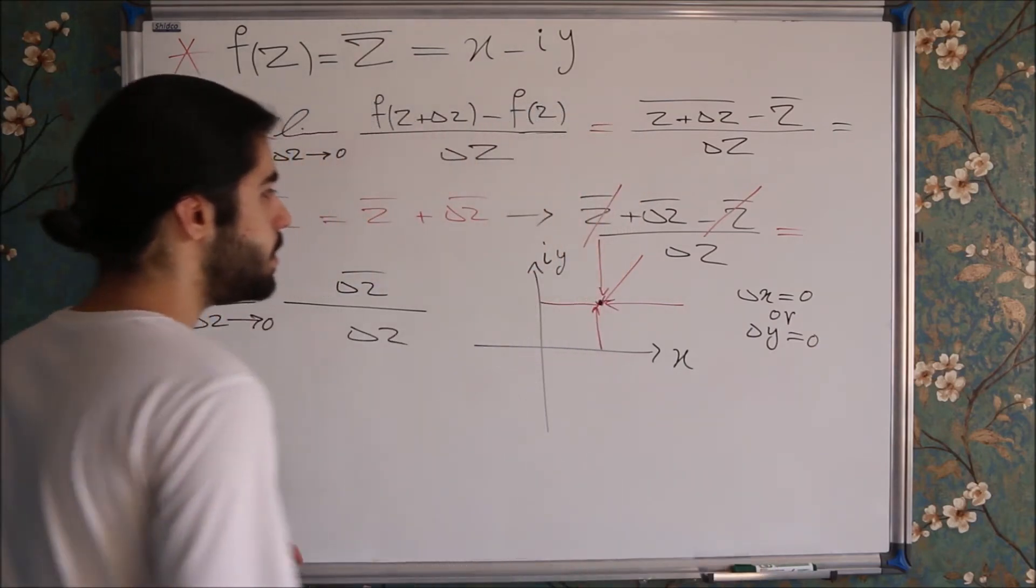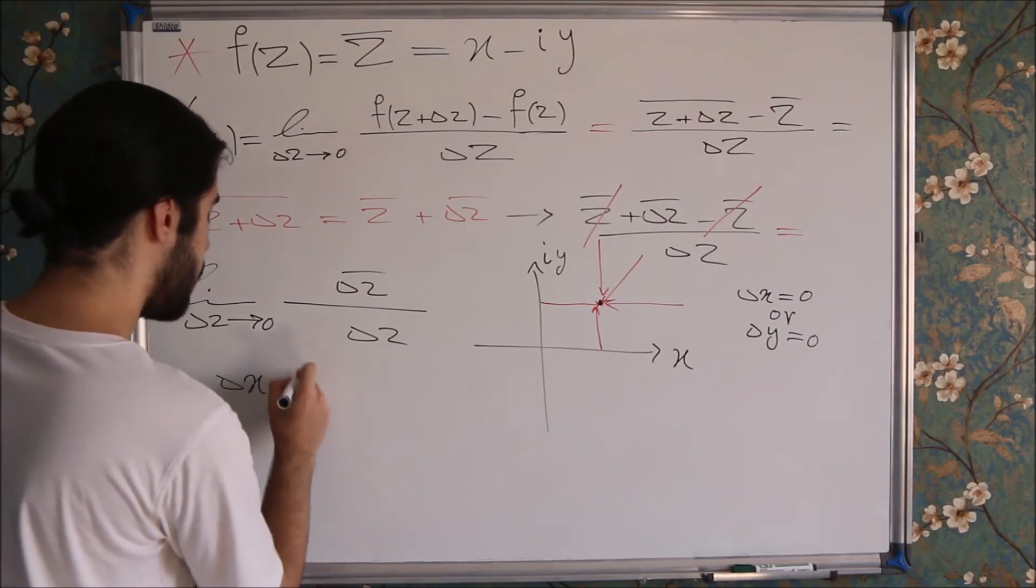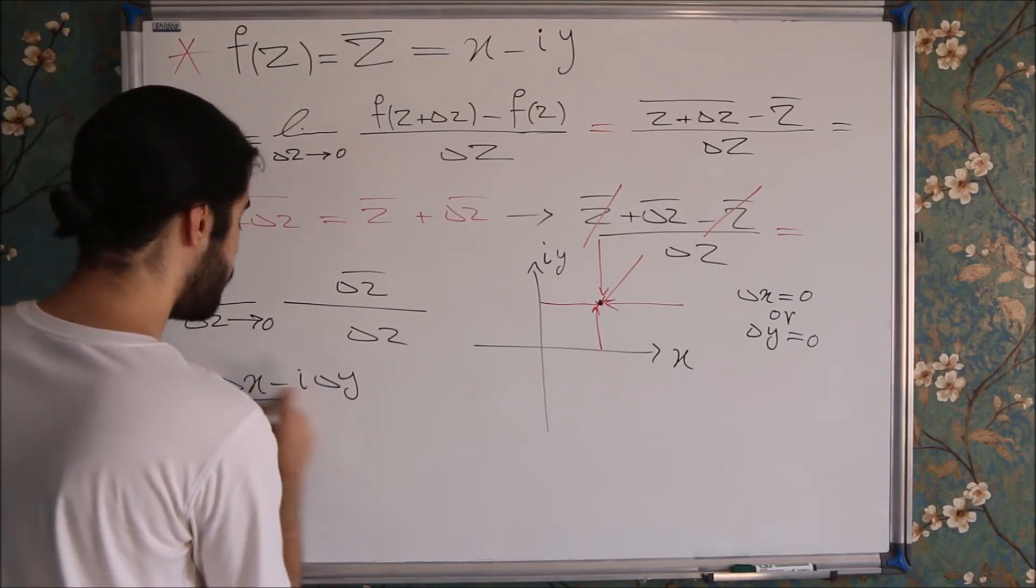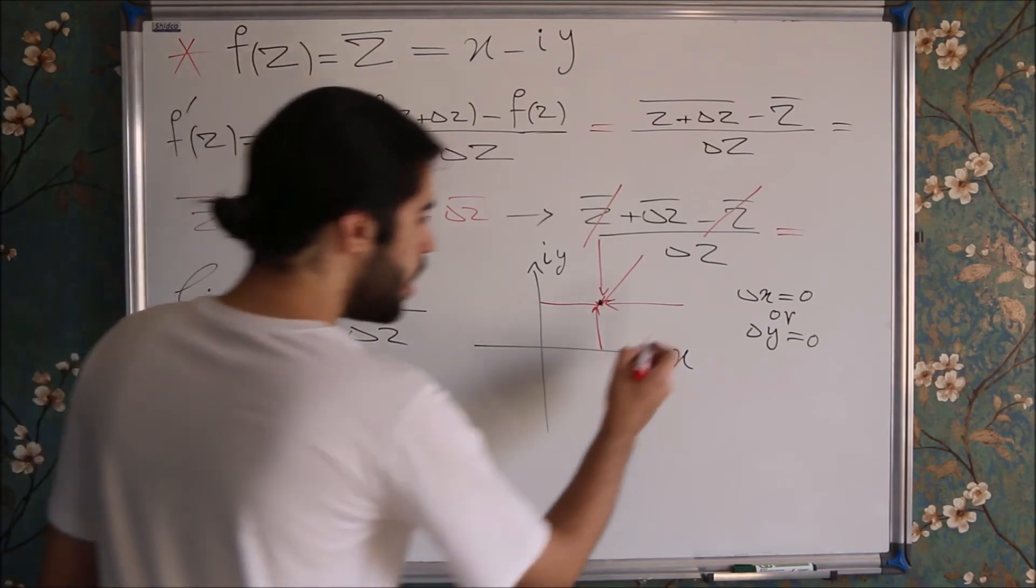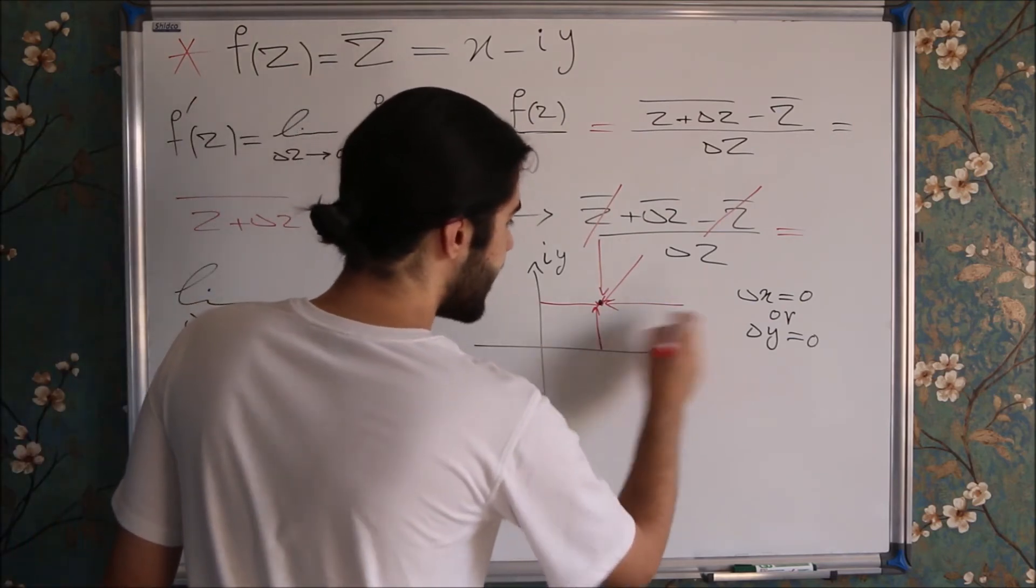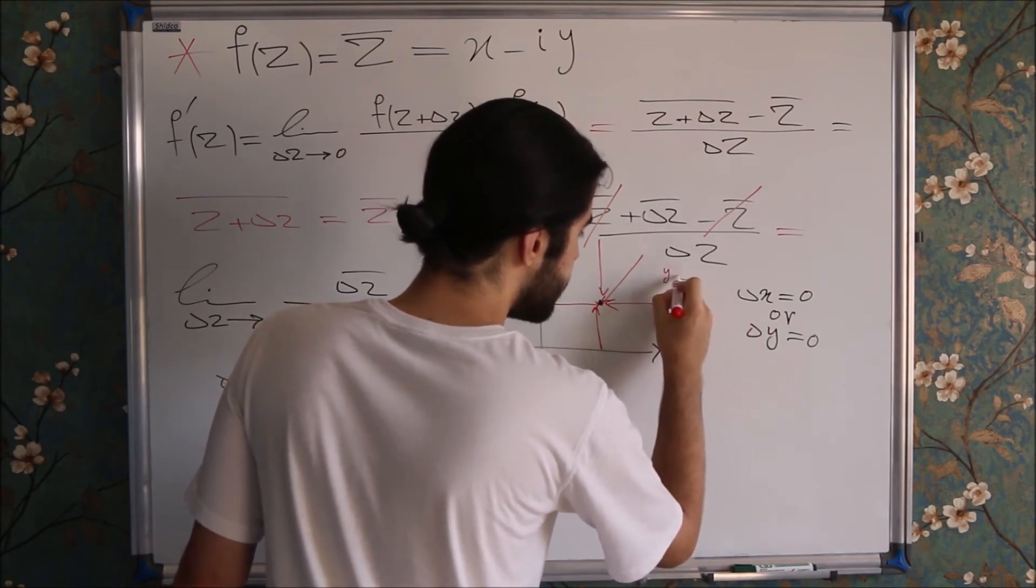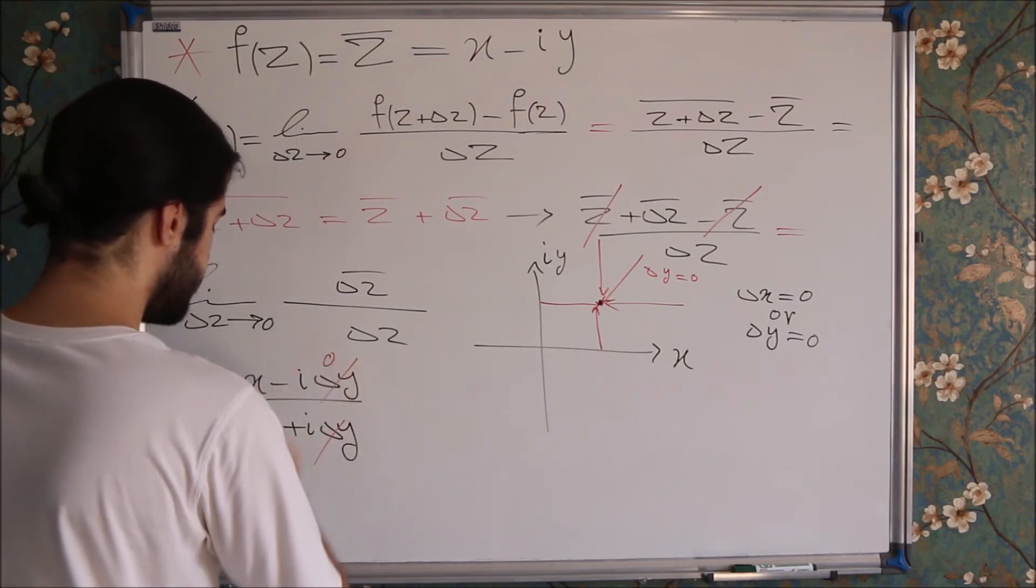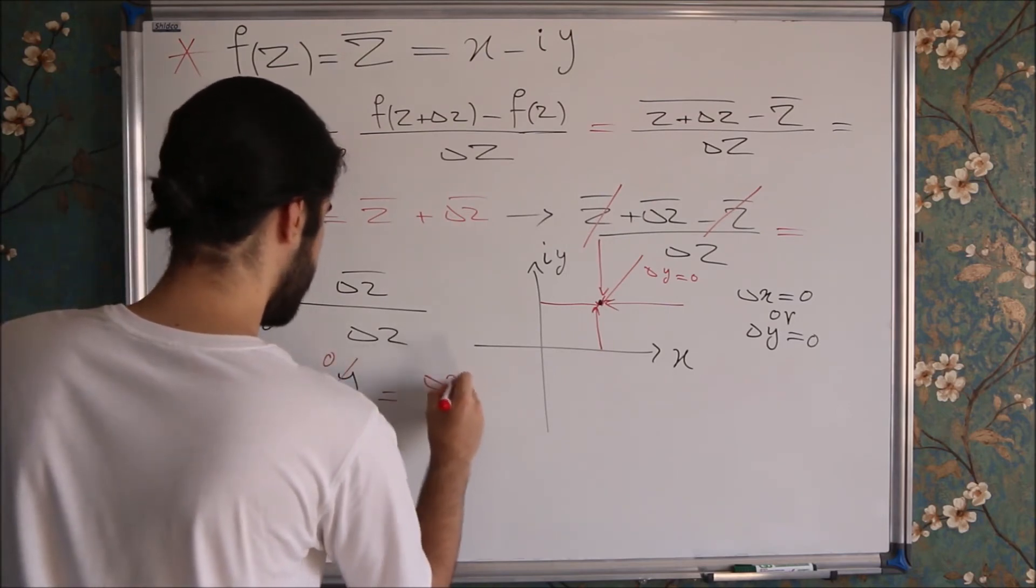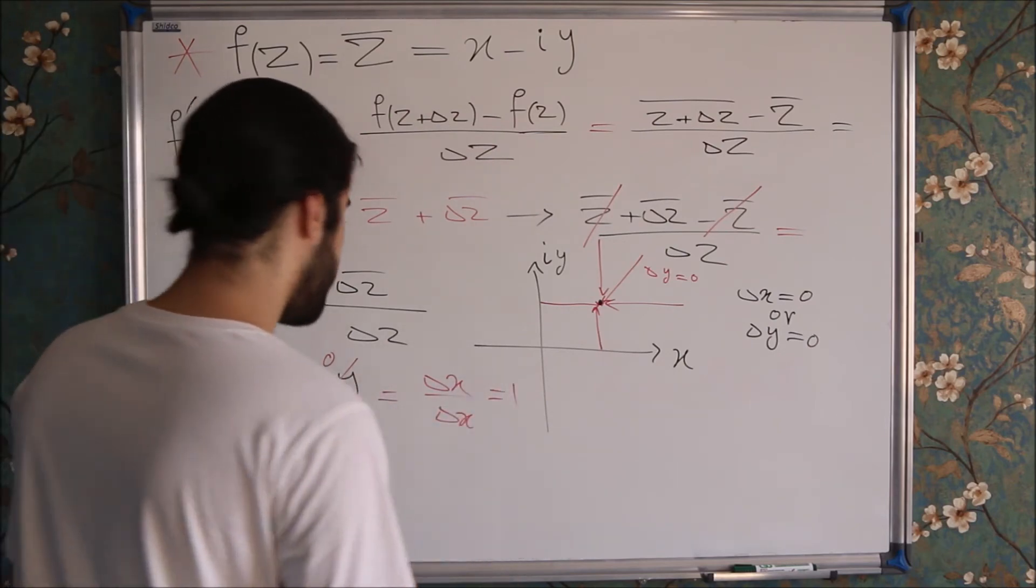And let's do it, because we can write it like Delta X minus i times the Delta Y over Delta X plus i times the Delta Y. Okay, if I move in the x-axis, then my change in Y variable is nothing but zero. So I can cancel this Delta Y and write it like zero. So I will get Delta X over Delta X, which is one. So in this case, our derivative is nothing but one.